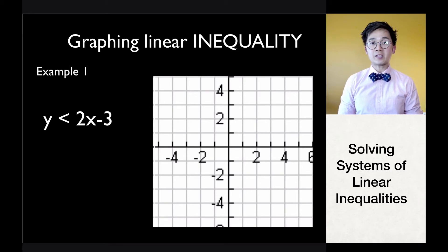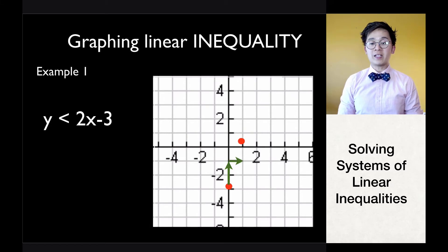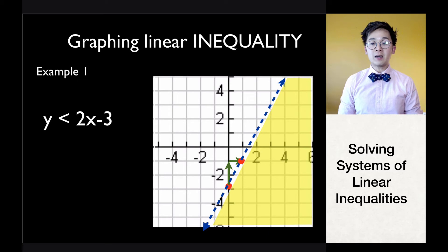Let's graph 2x minus 3 using the method for graphing a linear equation. Start at the y-intercept, which is negative 3. Since the slope is positive 2, move two units up and one unit to the right to get the second point. Since the inequality uses the less than symbol, we use a broken line, and since less than means shading below the line, this is the complete graph of the linear inequality.